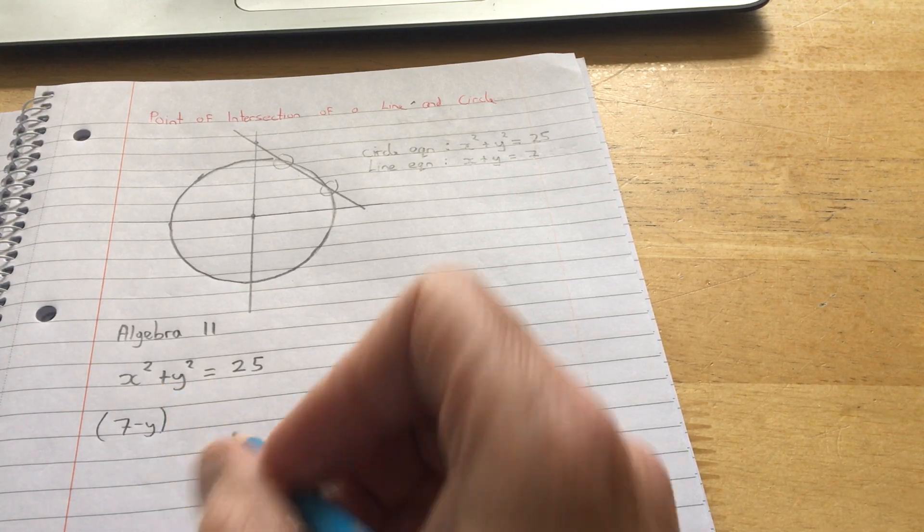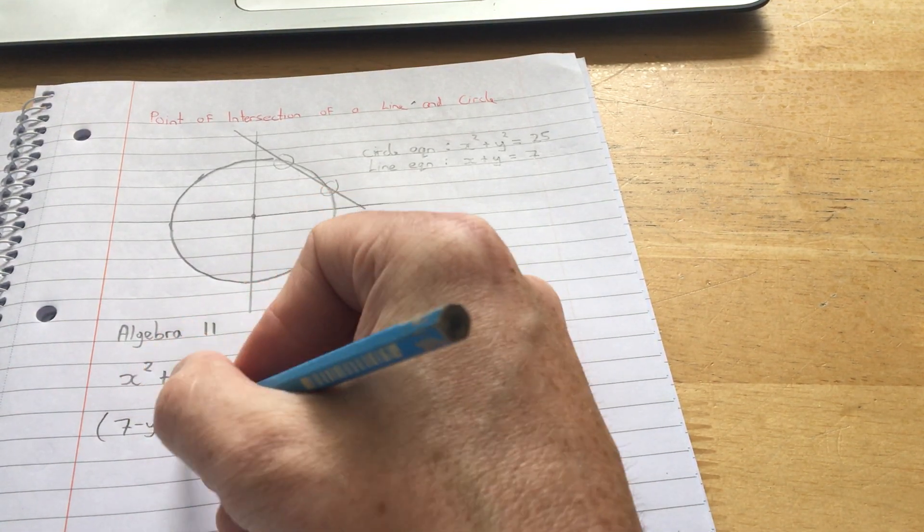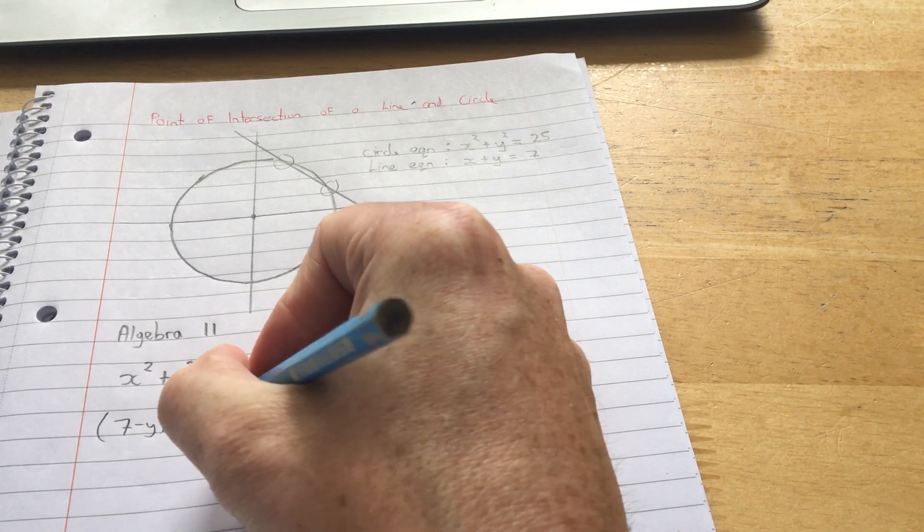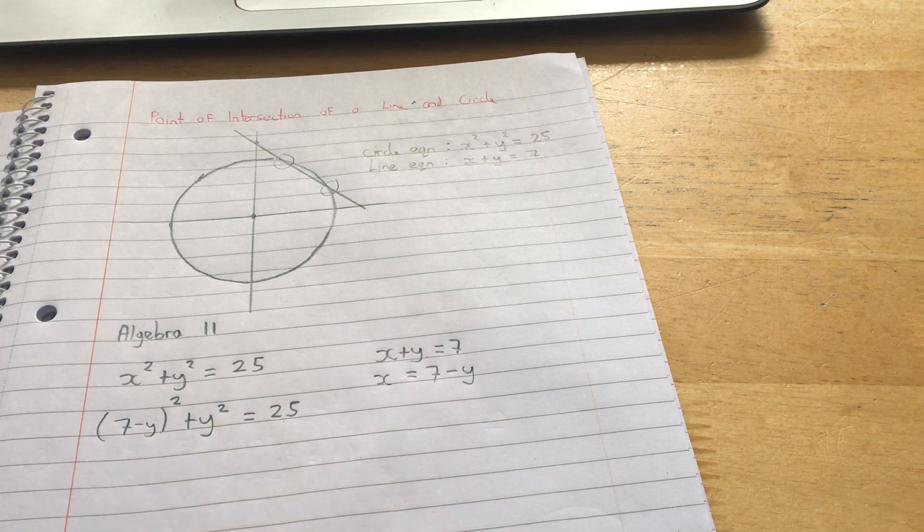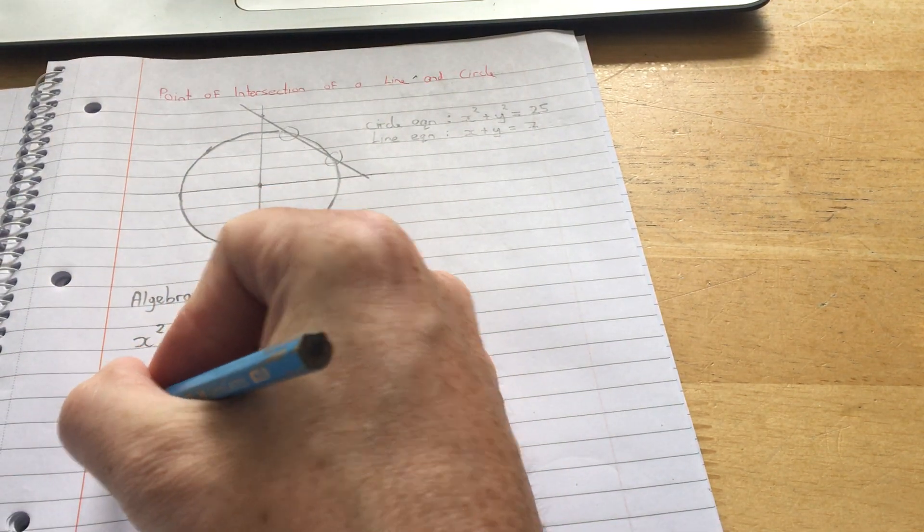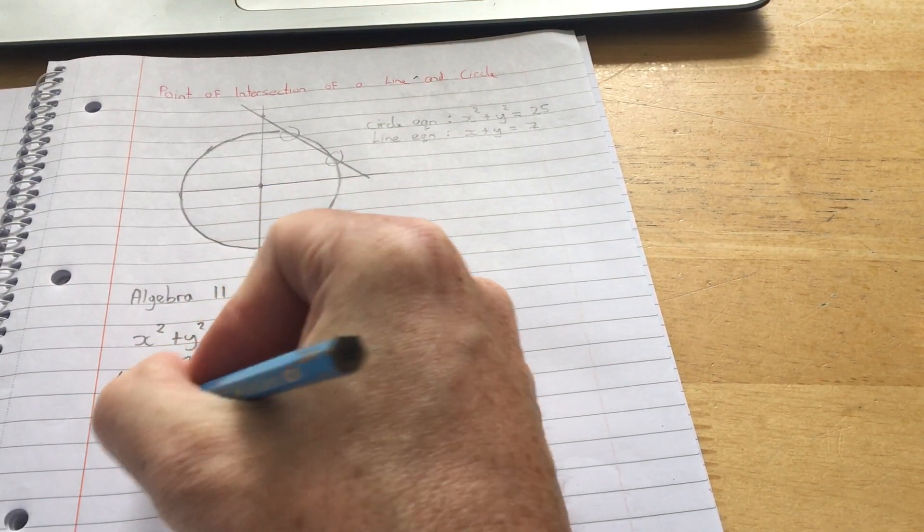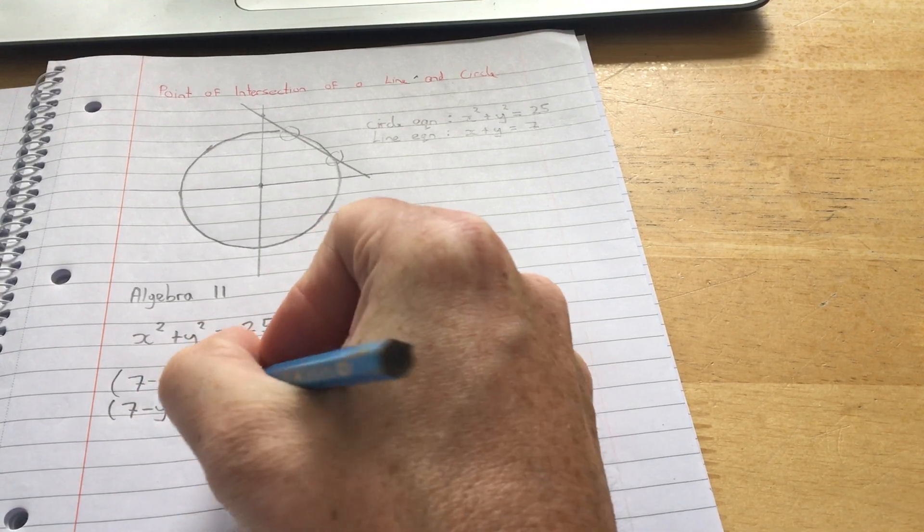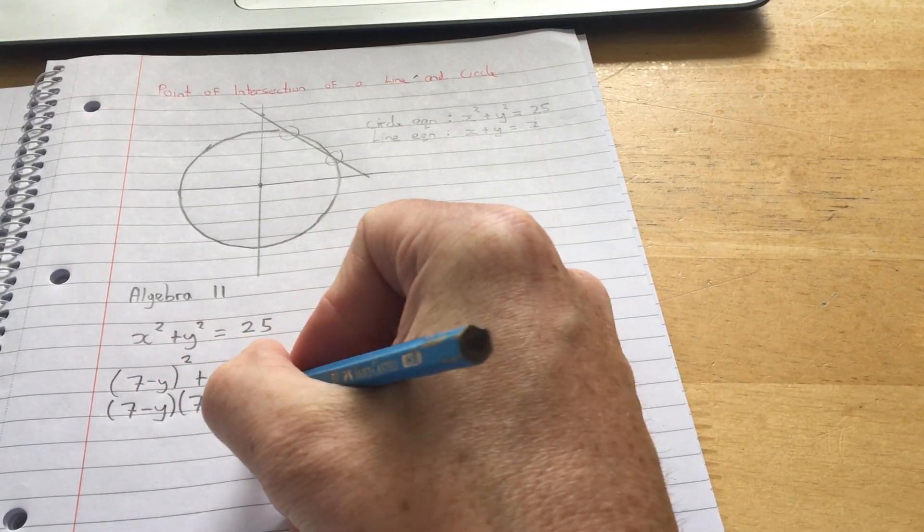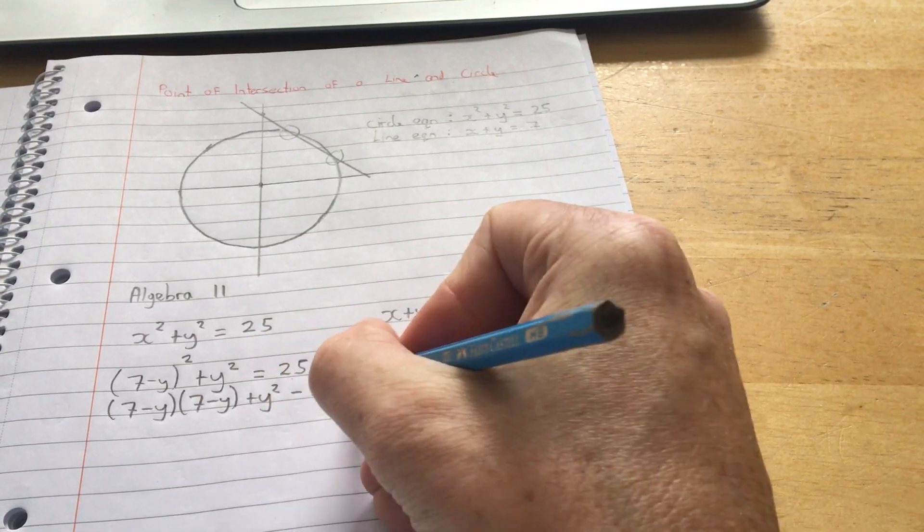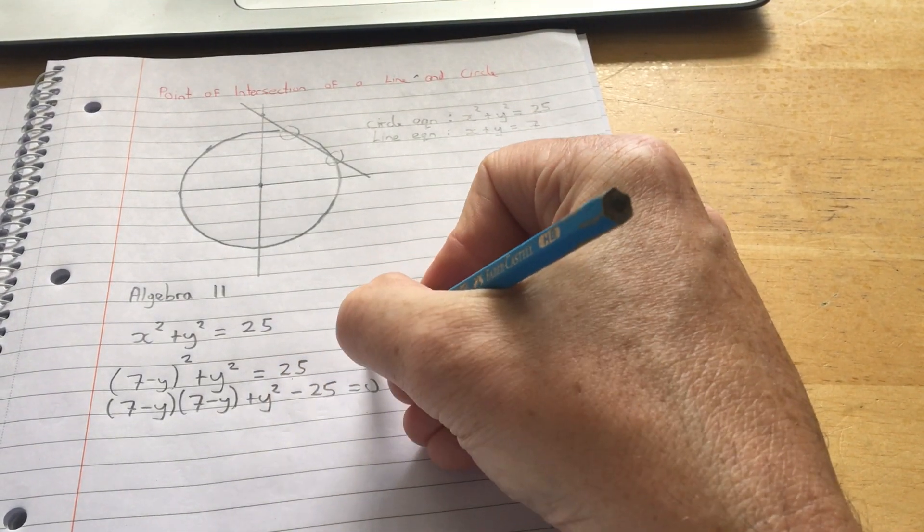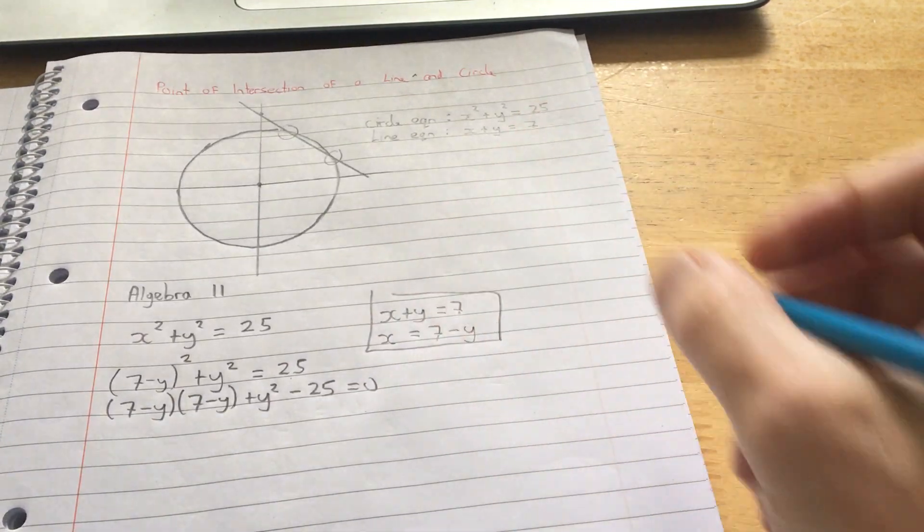Instead of x squared, I get 7 minus y squared plus y squared equals 25. I'm going to square out the brackets. So multiply, 7 minus y squared means 7 minus y by 7 minus y plus y squared. And I'm going to take this 25 over to the left-hand side equals 0. So that was just the little bit I used there to get me set up.